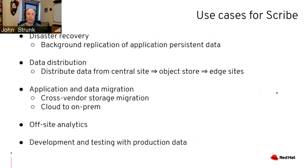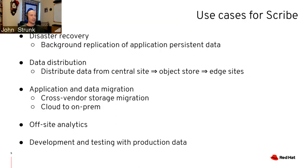There are many use cases for Scribe. The most obvious is disaster recovery — replicating application data from a primary cluster to a secondary. It's also useful for data distribution, where a central cluster generates data and replicates it out to edge sites. Other use cases include data migration between storage systems, moving data between cloud and on-prem environments, off-site analytics, and replicating production data for dev and test scenarios.